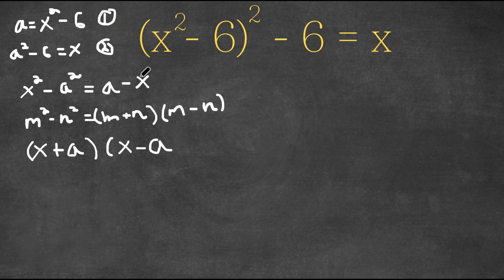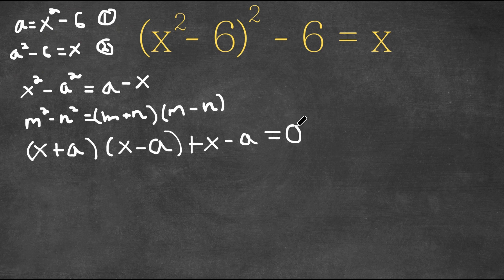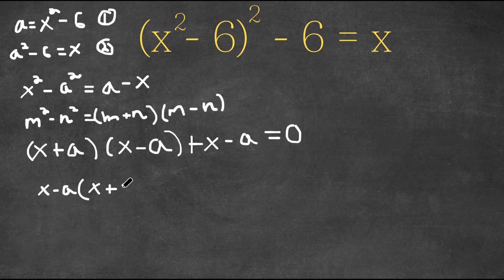Now if I add x on both sides we get plus x, and then if I subtract a on both sides we get minus a. Because there's nothing left on the right-hand side, we simply have zero. So I'm going to factor out x minus a. x minus a times x plus a, divided by x minus a, is simply x plus a. And x minus a divided by x minus a plus one equals zero.